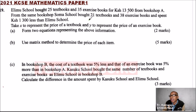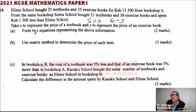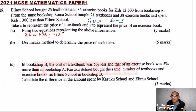We use X for textbook and Y for exercise book. Looking back at the question, for Erimu, we have 25X — that is 25 textbooks — plus 35Y for the exercise books. That equals the amount spent, which is 13,500.